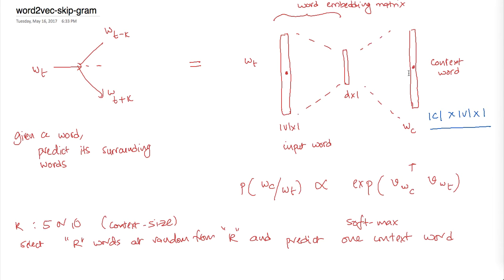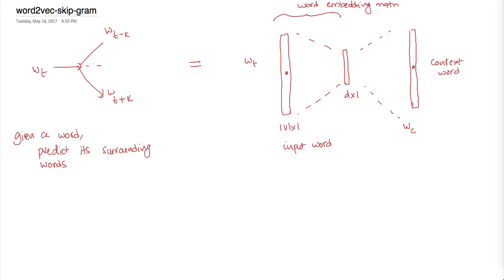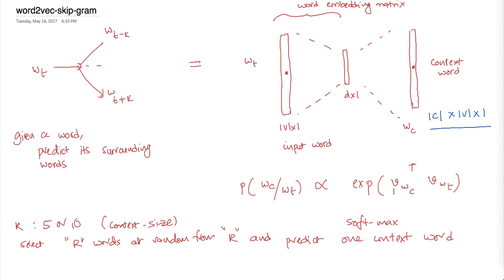The general problem with both CBOW and the skip-gram model is that it's a one-of-V classification. Typically V is very large — on the order of 10^5 or 10^7. Computing the normalization constant in the denominator is very expensive, since you have to sum over all words in the vocabulary. Mikolov et al. address this by approximating the softmax with a tree representation — this is called hierarchical softmax.